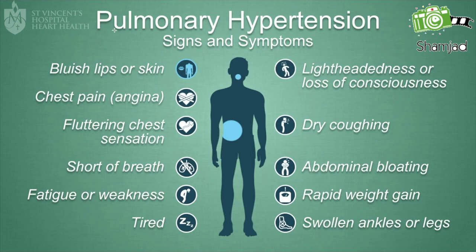Here are the signs and symptoms of pulmonary hypertension: bluish lips or skin, chest pain or angina, fluttering chest sensation, shortness of breath, fatigue or weakness, tiredness, loss of consciousness or syncope, dry coughing, abdominal bloating, rapid weight gain, and swollen ankles or legs.